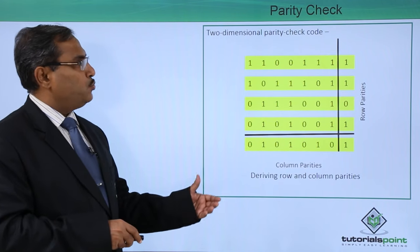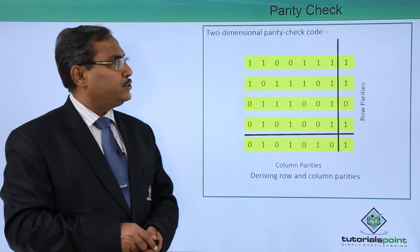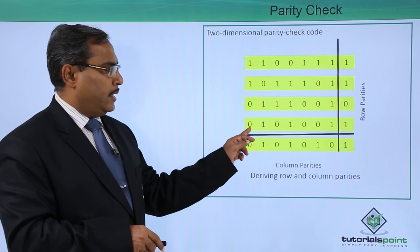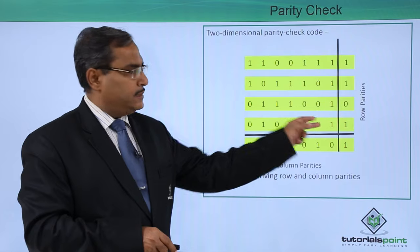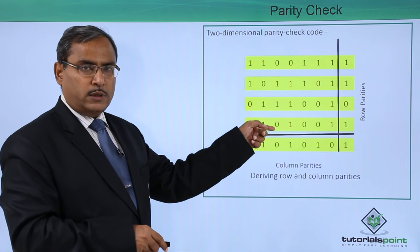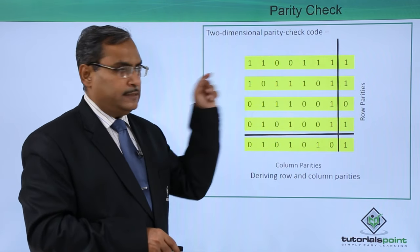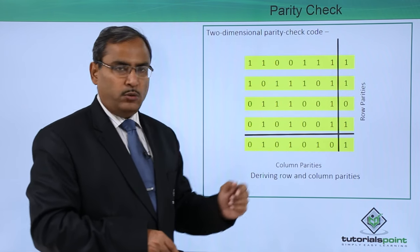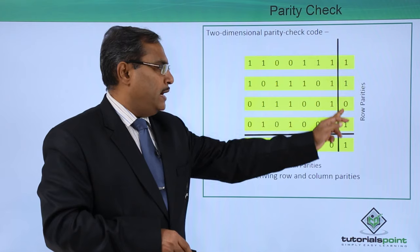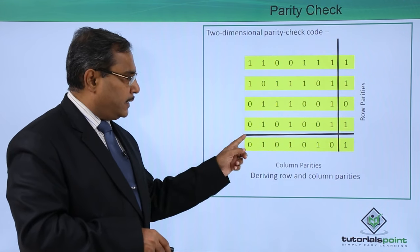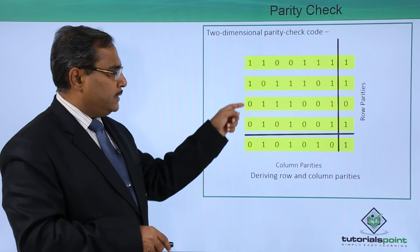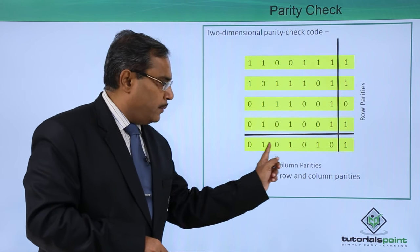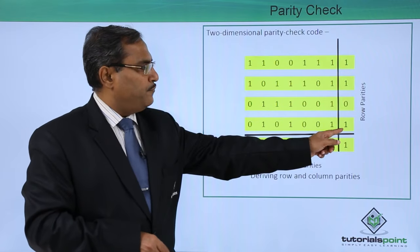Now let us go to the two-dimensional parity check code. Here we are having our data set of 7-bit words, and we have 4 words. We are calculating the row-wise parities. In case of even parity, I shall be putting 1 where needed. In this way the row parity bits are formed. Similarly, considering the columns — here we are having 2 ones in this column, so the parity bit will be 0 for even parity. In this way the column parity bits are formed, and then this entire block will be transmitted.